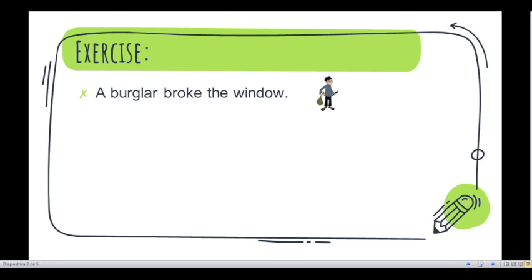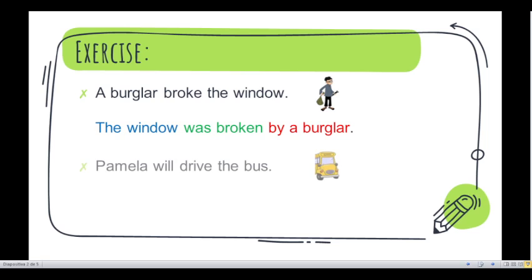Okay, let's see the answer of the first sentence. The window was broken by a burglar. Very good. Remember that was broken is because was is the verb to be conjugated in simple past, broken because the main verb is in past participle, and by a burglar because the subject of the active sentence will be at the end of the passive sentence. Very good. Let's continue with another sentence.